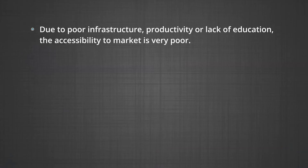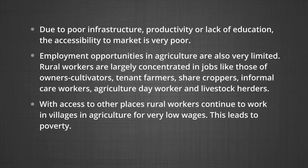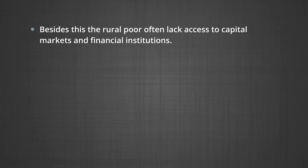Insufficient access to market is another problem. Due to poor infrastructure, low productivity, or lack of education, accessibility to market is very poor in rural areas. Employment opportunities in agriculture are also very limited. Rural workers are largely concentrated in jobs like owners, cultivators, tenant farmers, sharecroppers, informal care workers, agriculture day workers, and livestock herders. With minimal access to other places, rural workers continue to work in villages in agriculture for very low wages, which leads to poverty. Besides, the rural poor often lack awareness and access to capital markets and financial institutions.